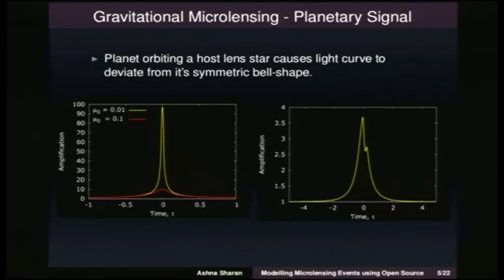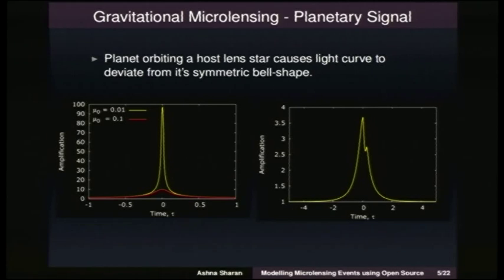Compared to that, if we have multi-lens systems, for example a planet orbiting a host star, then we have deviations to the bell-shaped curve. We have bumps or dips. This is what we look for — this is a typical planetary signal. This is what tells us we have perhaps a planet orbiting a host lens star.